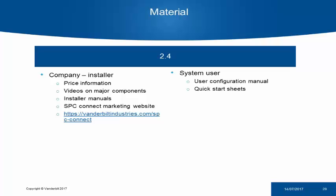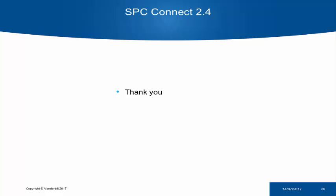In terms of materials, we have created quite a lot of information for this SPC Connect 2.4 release. There is pricing information on SPC Connect, videos with far more information on all the major components, and the installer manuals now available in HTML format. We have the SPC Connect marketing website live, and for system users, the user configuration manual is live on spcconnect.com or spcsupportinfo.com today. We also have quick start sheets which we intend to release in the coming weeks, providing a speedier way for installers to register users on SPC Connect. Thank you for your attention, and if you have any questions about SPC Connect 2.4, please let us know.